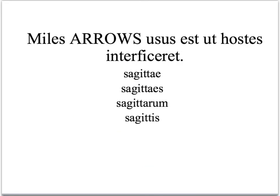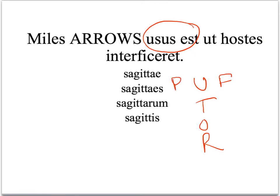Here's an example. We have usus est: 'Miles sagittis usus est ut hostes interficeret.' Usus est is a form of utor — remember, if we think of PUFF: potior, utor, and frior. So they want you to pick the ablative, sagittis.